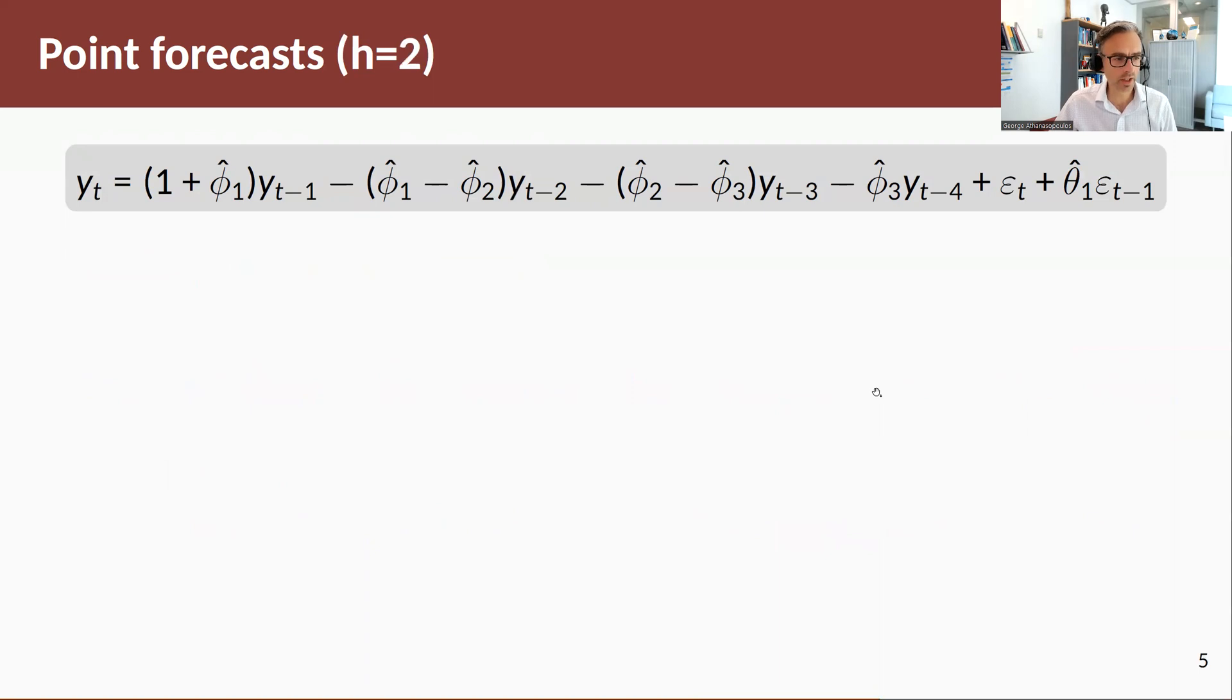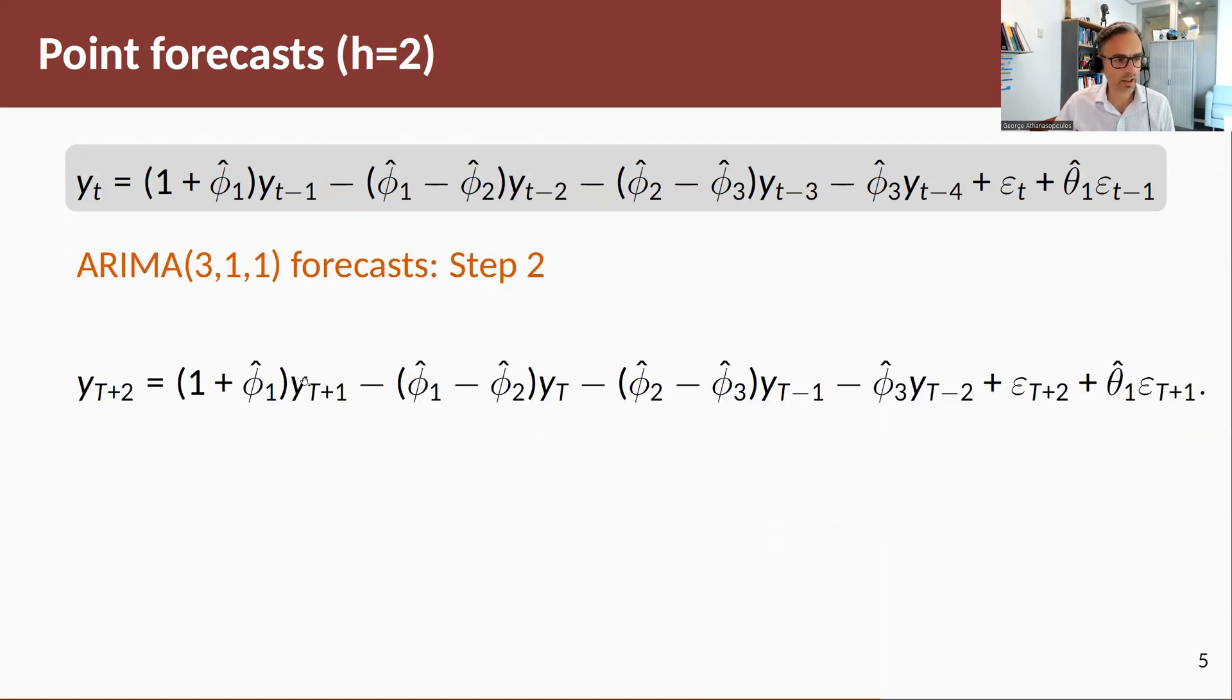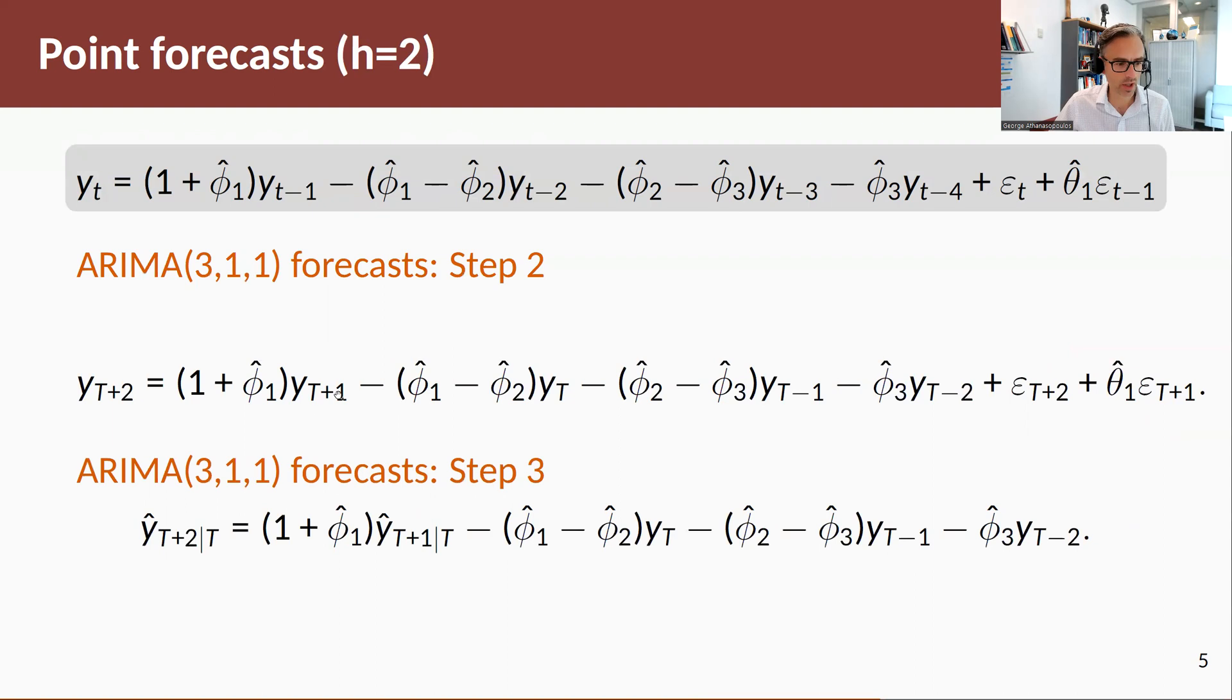Now if I'm to do a two-step ahead, I take the equation and I roll it forward again. And as I roll it forward, I have yt plus 1. Now I'm going to replace that yt plus 1 by, if I take the expected value of that future random variable, I'm going to replace that by its point forecast.